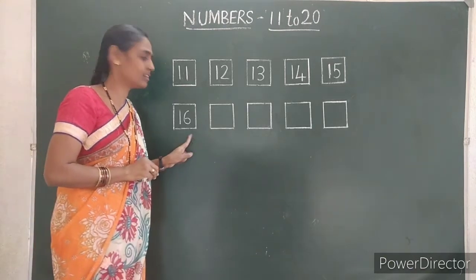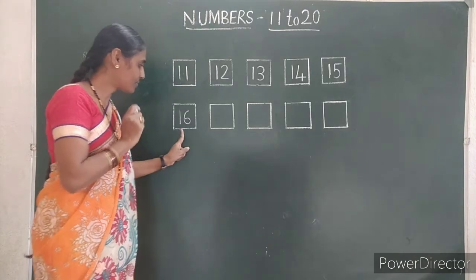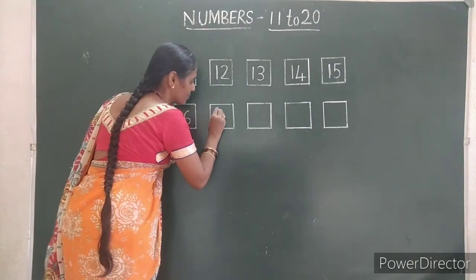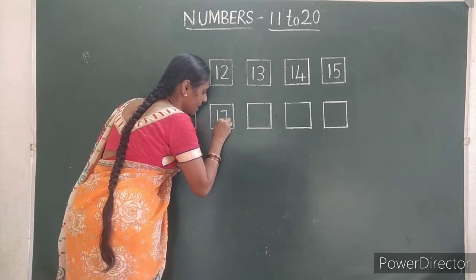After sixteen, children, which number will come in the box? After sixteen, seventeen. First you write one. Then seven.